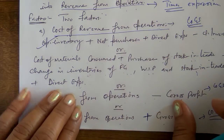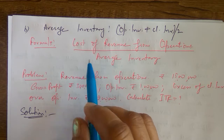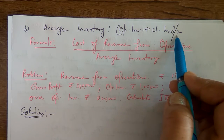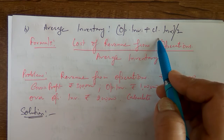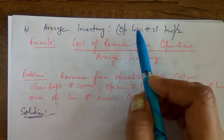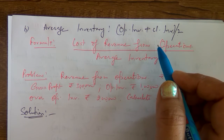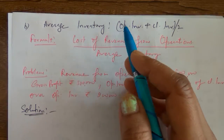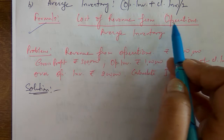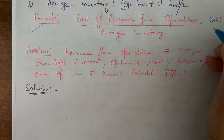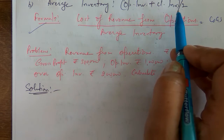The second factor is average inventory. Average inventory is calculated as opening inventory plus closing inventory divided by 2. If there are three items, divide by 3 — you divide by however many items you have. Here we have two types of inventory — opening and closing — so add them and divide by 2 to get average inventory. The formula is: cost of revenue from operations over average inventory, i.e., opening plus closing divided by 2. COGS and cost of revenue from operations mean the same thing.